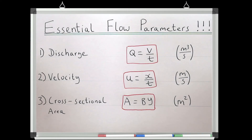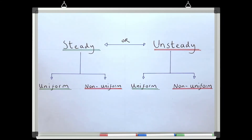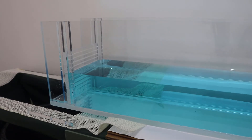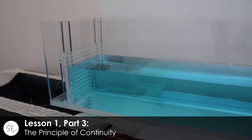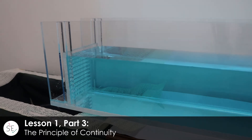In the first and second part of this lesson, we've looked at the three fundamental flow parameters, the equation for discharge that relates all three parameters together, and the definition of steady and unsteady flow, and uniform and non-uniform flow. In this final part of the lesson, we're going to bring all of these concepts together and look at something called the principle of continuity.